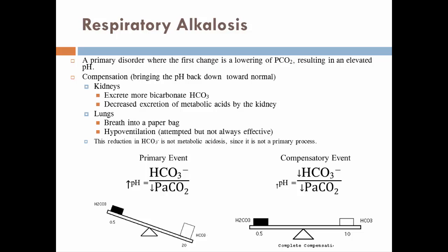The problem in respiratory alkalosis is too little CO2 — partial pressure of CO2 is way too low, making the pH too high. To compensate, if the denominator is too low, we lower the numerator. The kidneys decrease bicarbonate levels by excreting more bicarbonates or simply not reabsorbing all of them, so those bicarbonates end up in the urine.